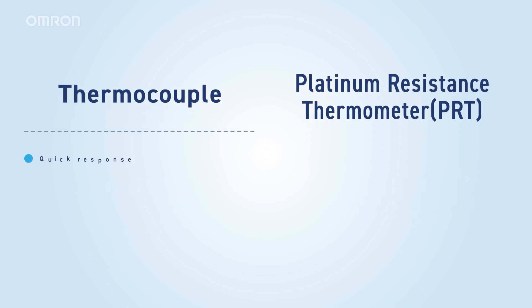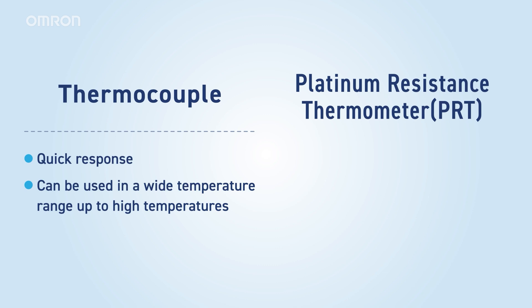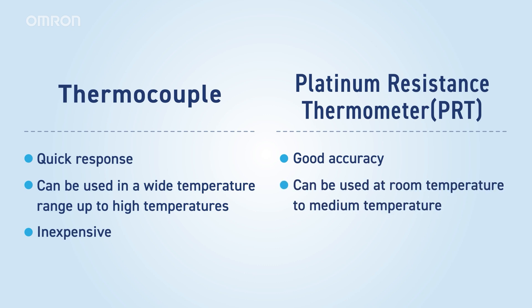Thermocouples have a fast thermal response and can be used over a wide temperature range, including high temperatures exceeding 1,000 degrees Celsius. They are also cost effective, making them widely used in various devices. PRTs offer good measurement accuracy, but are limited to use within the range of normal to medium temperatures. Due to their higher cost, they are used in devices that require high precision, such as scientific instruments and semiconductor manufacturing equipment.